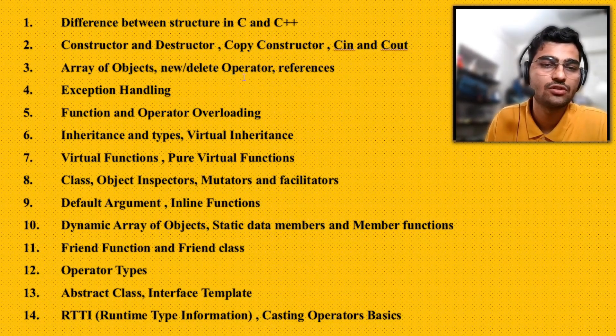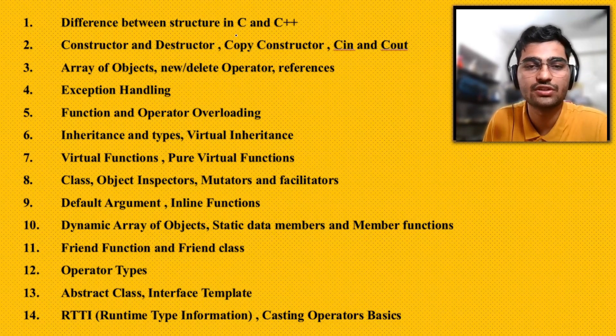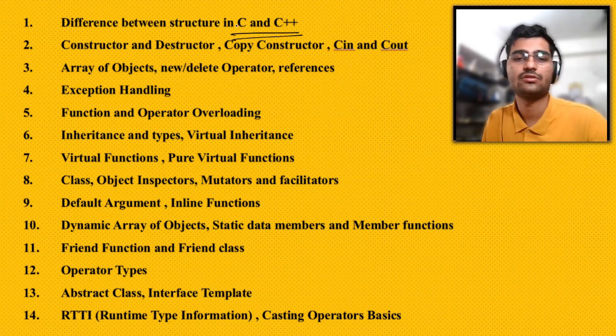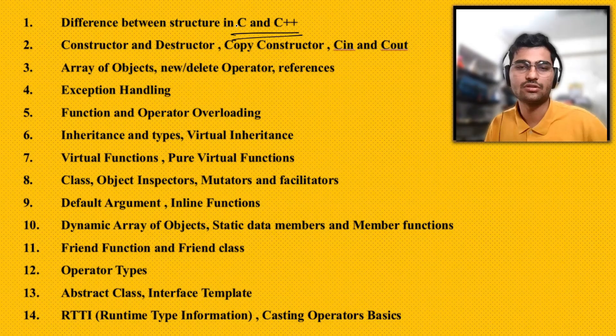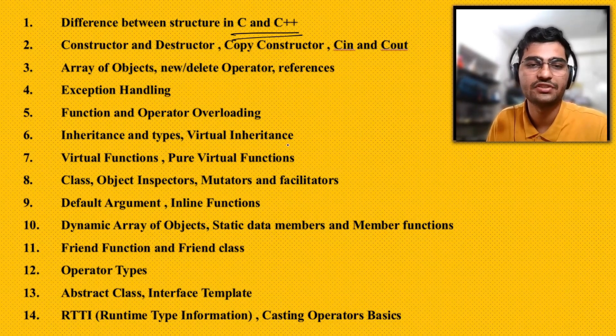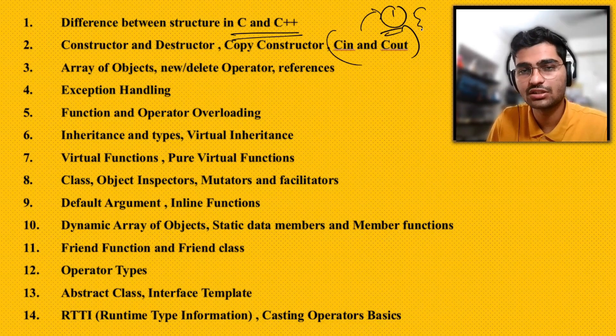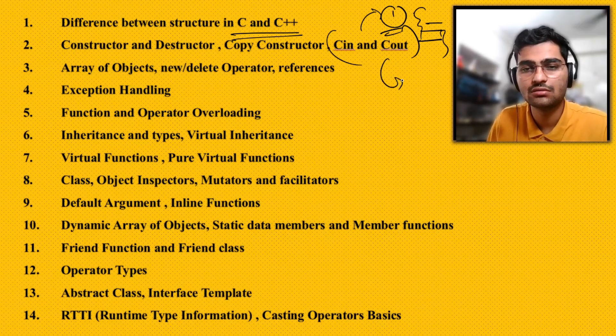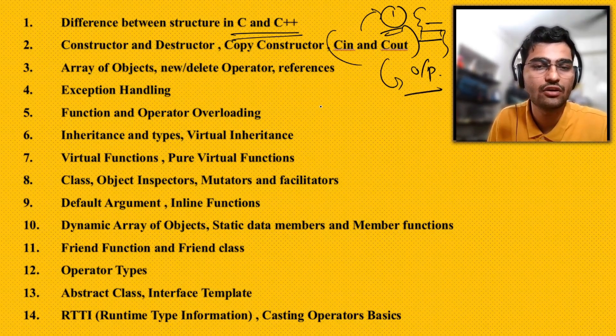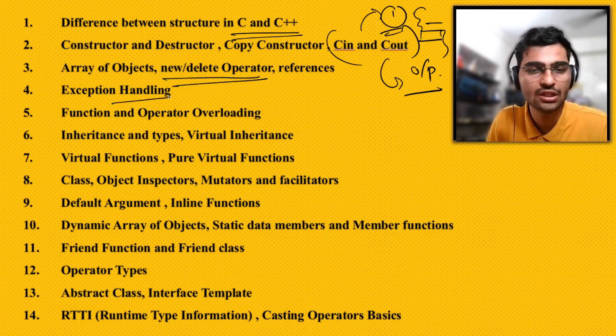Let's start the video. There are 14 topics which I focused on during the preparation of my exam. The first topic was the difference between structure in C and C++. C is procedure-oriented language, C++ is object-oriented language. You need to know what is constructor, C in, C out. I got one question where they gave a snippet of code and we needed to identify the correct output based on C in and C out.